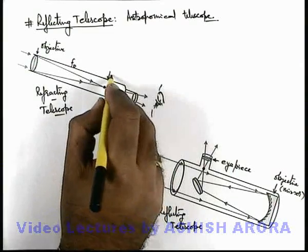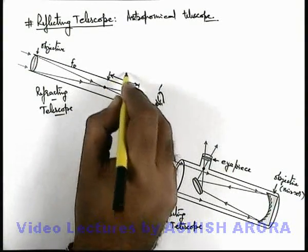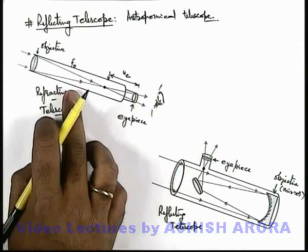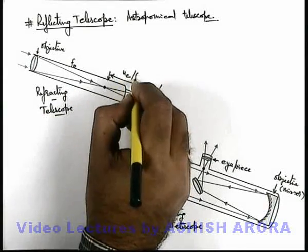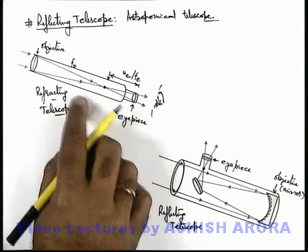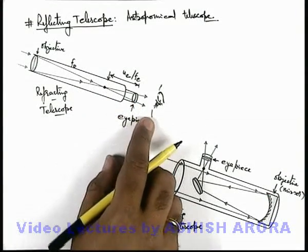So this distance we have discussed that it can be u_e for the final image to be produced at near point of the eye, or it can be f_e if final image is produced at infinity for the relaxed state of observer's eye.